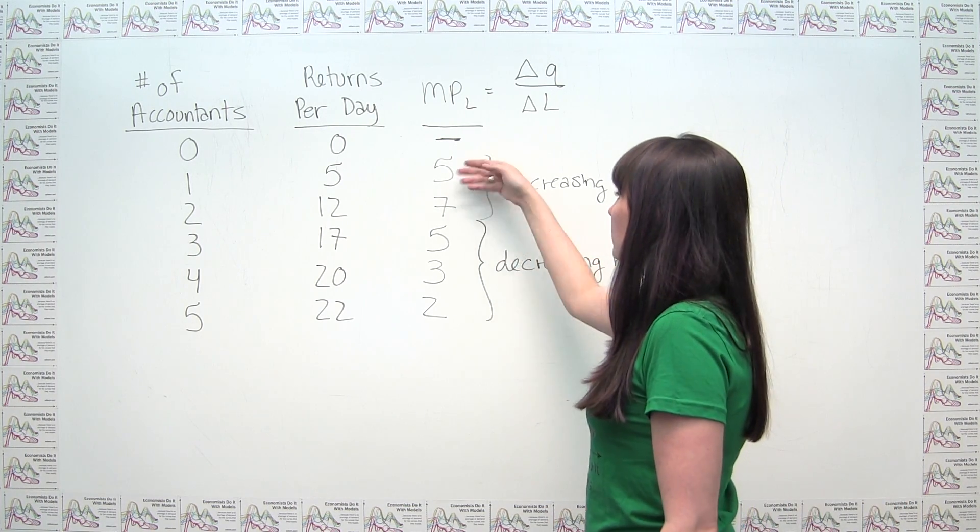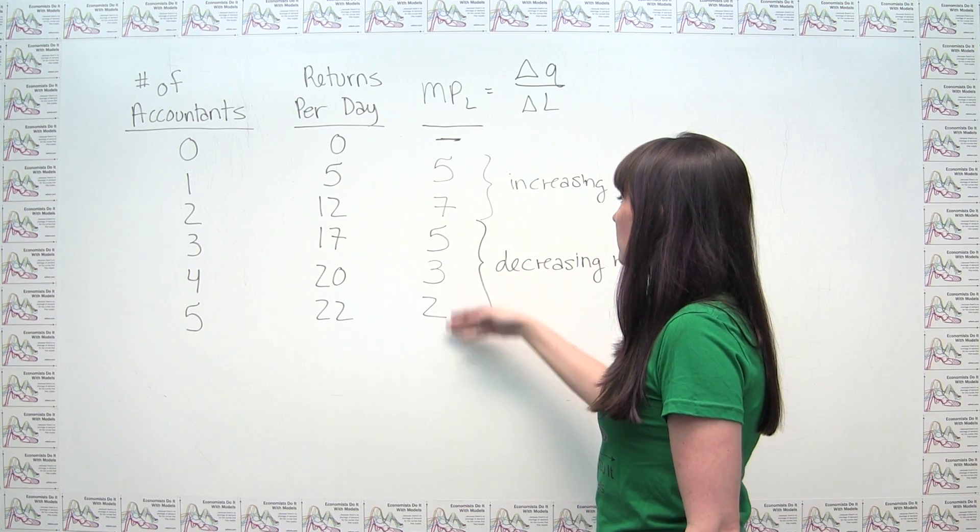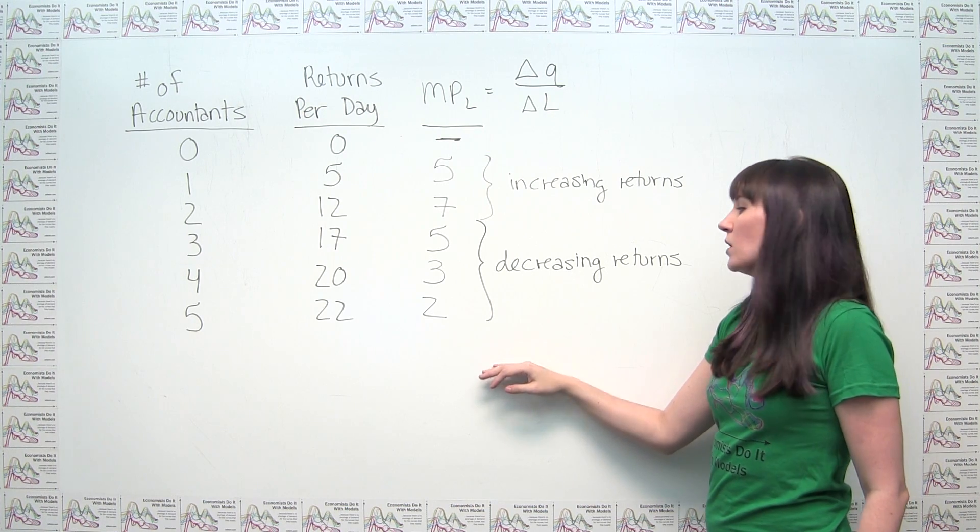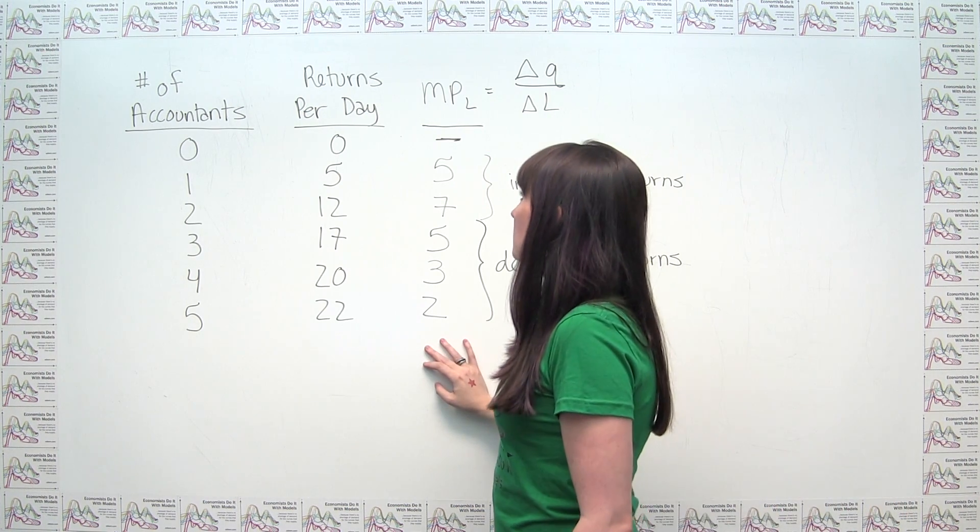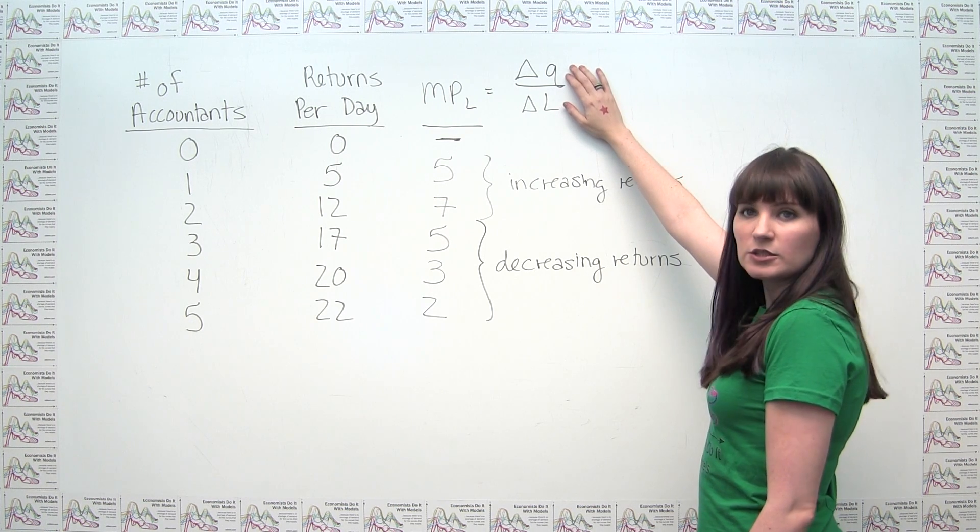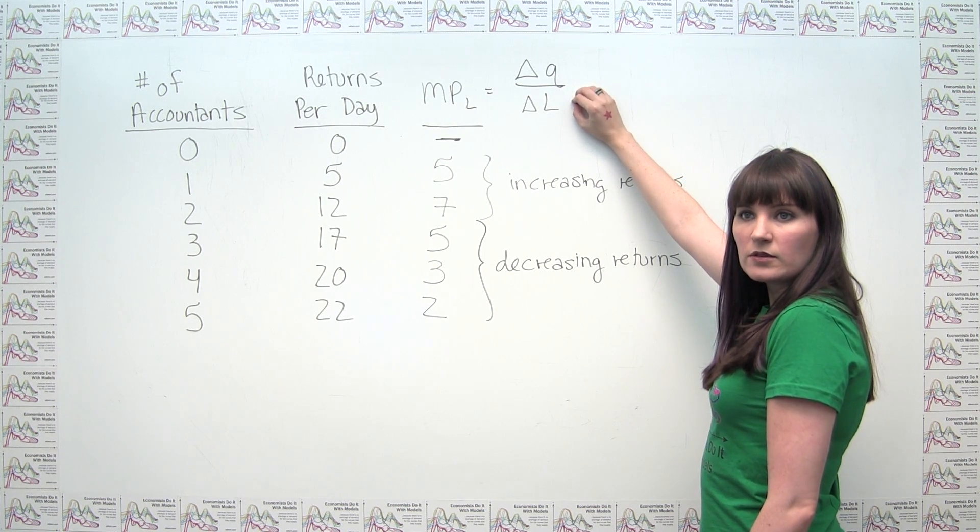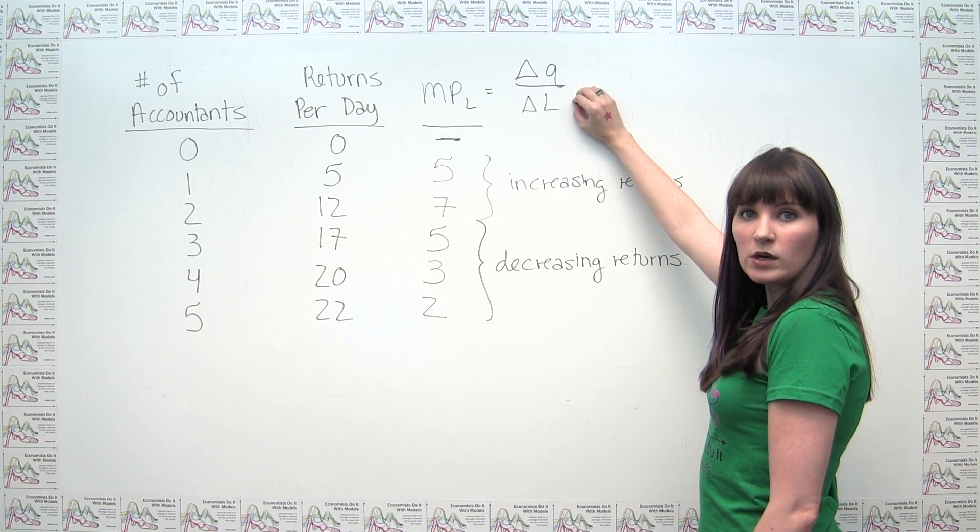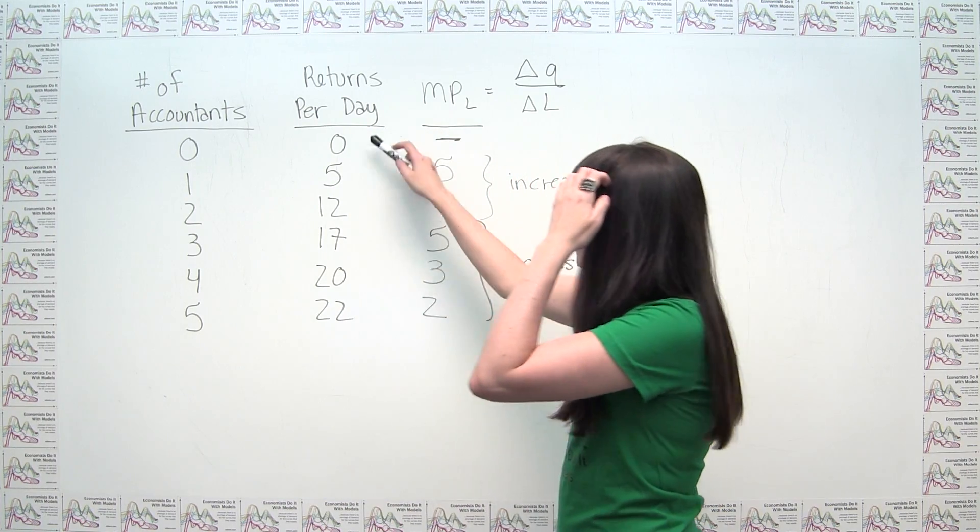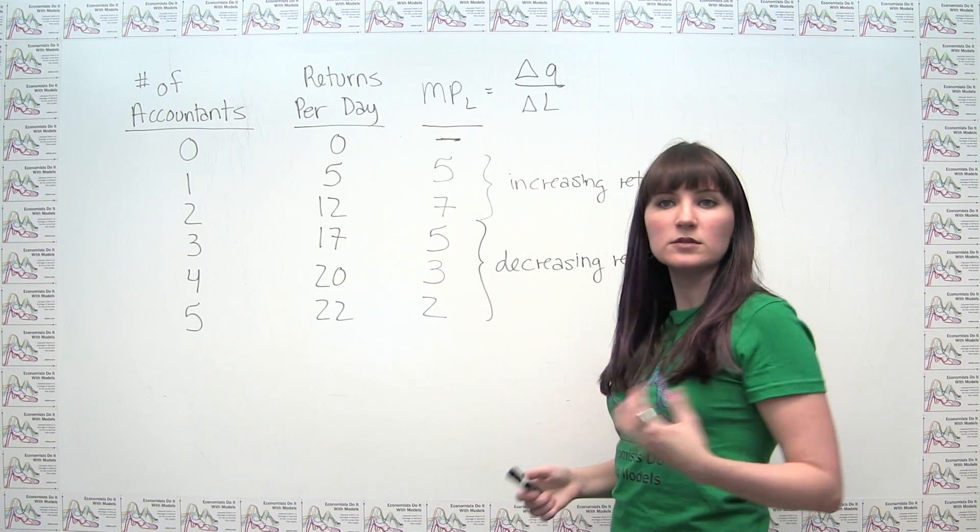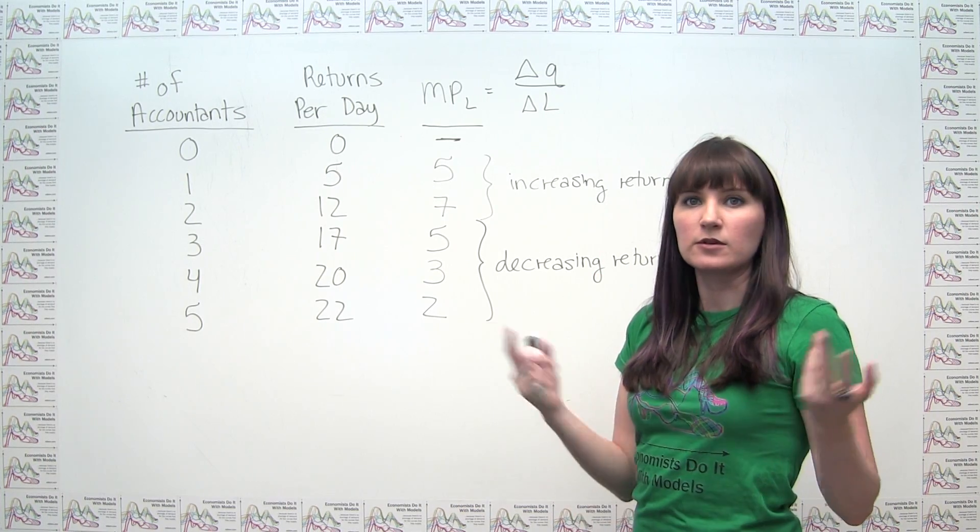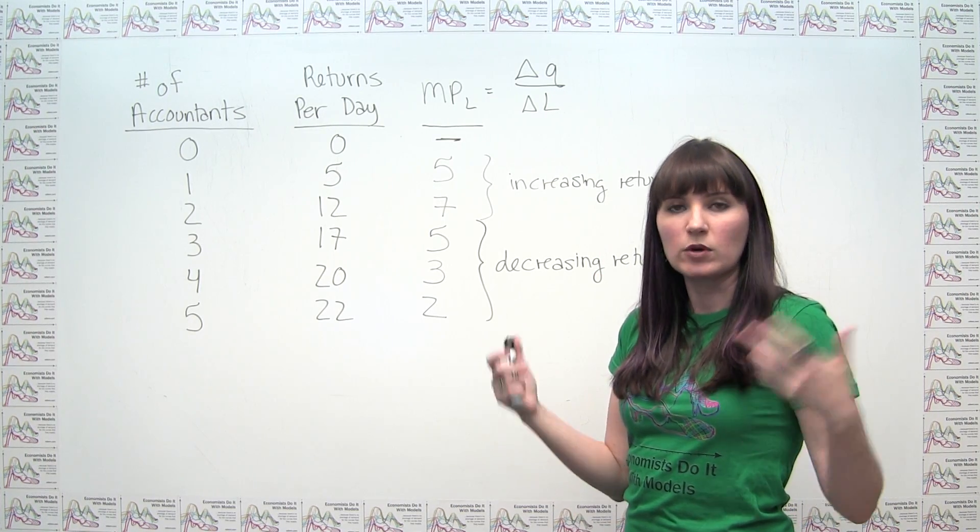But then almost universally, we start seeing eventually we start seeing decreasing returns to labor. And the reason for that is, think about what we were calculating here. We were calculating the change in quantity that resulted from adding one more worker holding everything else constant. So as we were going along here, we were adding more accountants, but we weren't adding more capital. We weren't adding more computers. We weren't adding more adding machines.